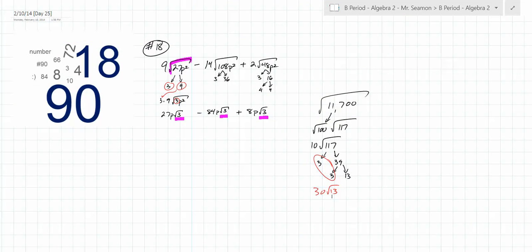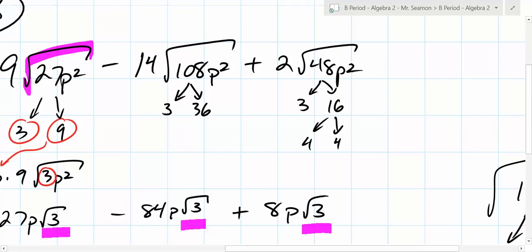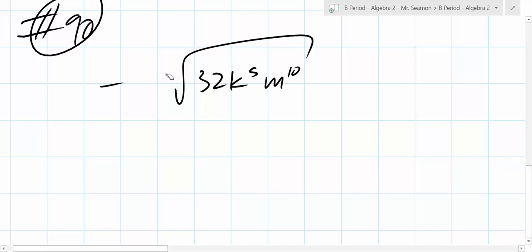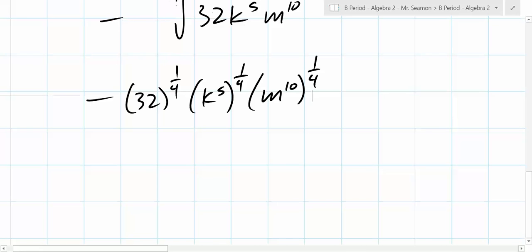Can you just clarify what exactly you're doing this time? I'm doing a really poor job of writing those today. So you want to find the 4th root of all those things. What does 4th root mean? What power is that? 1/4. So it's going to be negative 32 to the 1/4, K to the 5th to the 1/4, M to the 10 to the 1/4. And what do you do with powers of powers?